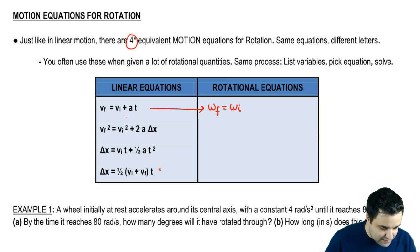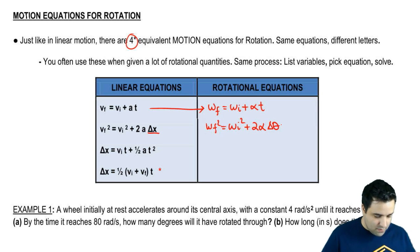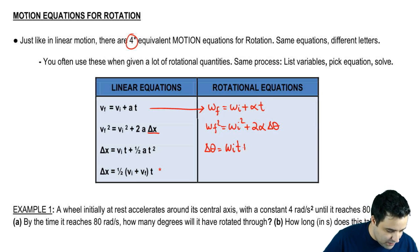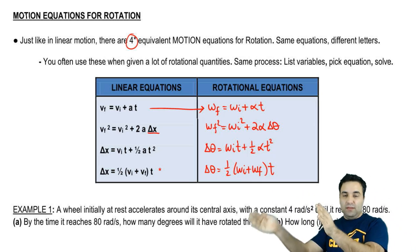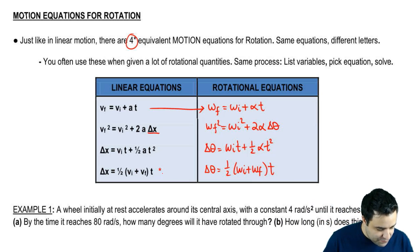Instead of V, I'm going to have omega. Omega final equals omega initial plus alpha T. Same thing here, omega final squared equals omega initial squared plus 2 alpha delta theta. And then delta theta equals omega initial T plus half of alpha T squared. And then this one is delta theta equals half omega initial plus omega final times T. You can think of this as translating from linear to rotational. Same exact stuff, the letters just look different.